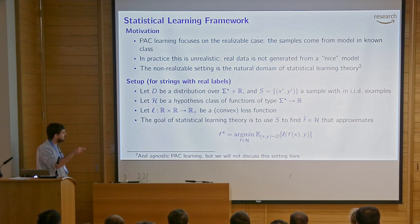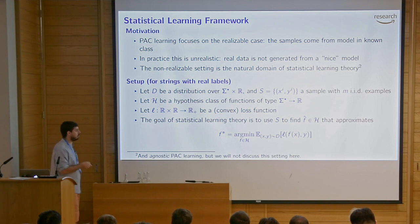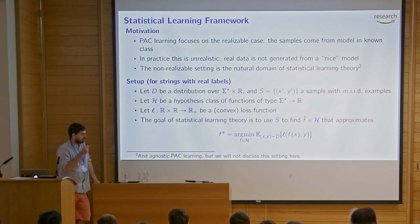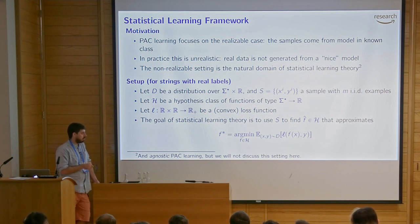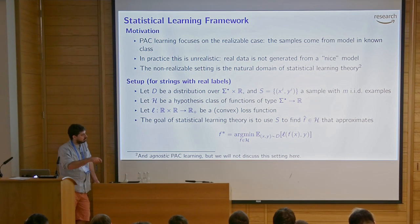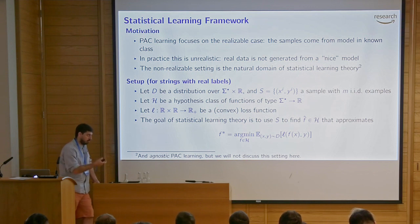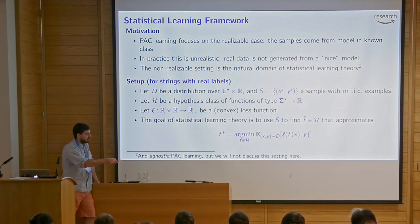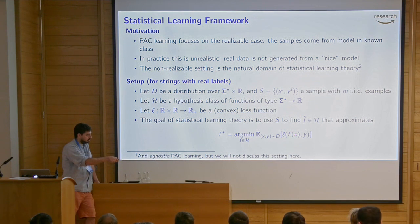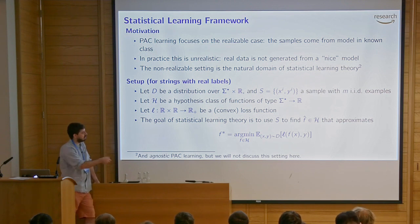With data from a distribution, a hypothesis class, and a loss function, our problem is to find an f-hat in H that minimizes the expected risk: for all hypotheses in H, compute the expected loss when drawing a fresh example (x,y) from distribution D and predicting with hypothesis f. We want the f that minimizes this, called f*. This is complicated for two reasons: we can't directly compute this quantity, and depending on H, even if we had it, the optimization might be NP-hard or non-convex.